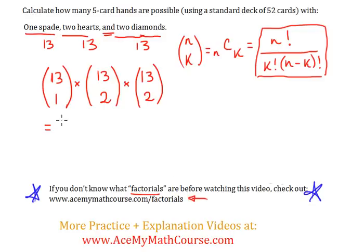13 combination 1 will be 13. Every time we have n combination 1, that's just gonna be equal to n. Then, we have 13 combination 2, which will work out to be 78. And 78 again, because that's the same thing, 13 combination 2.